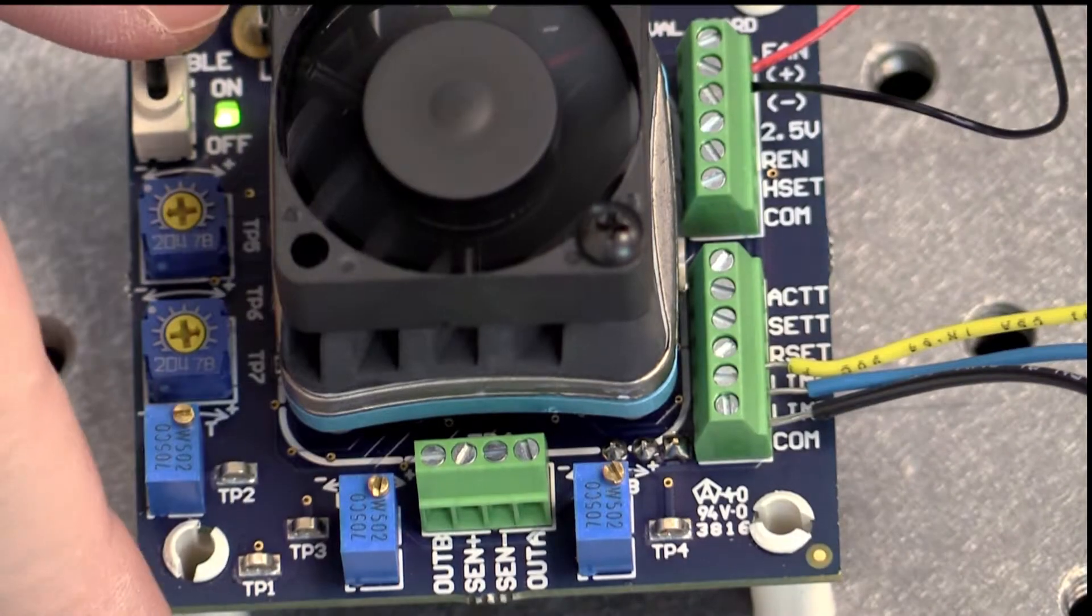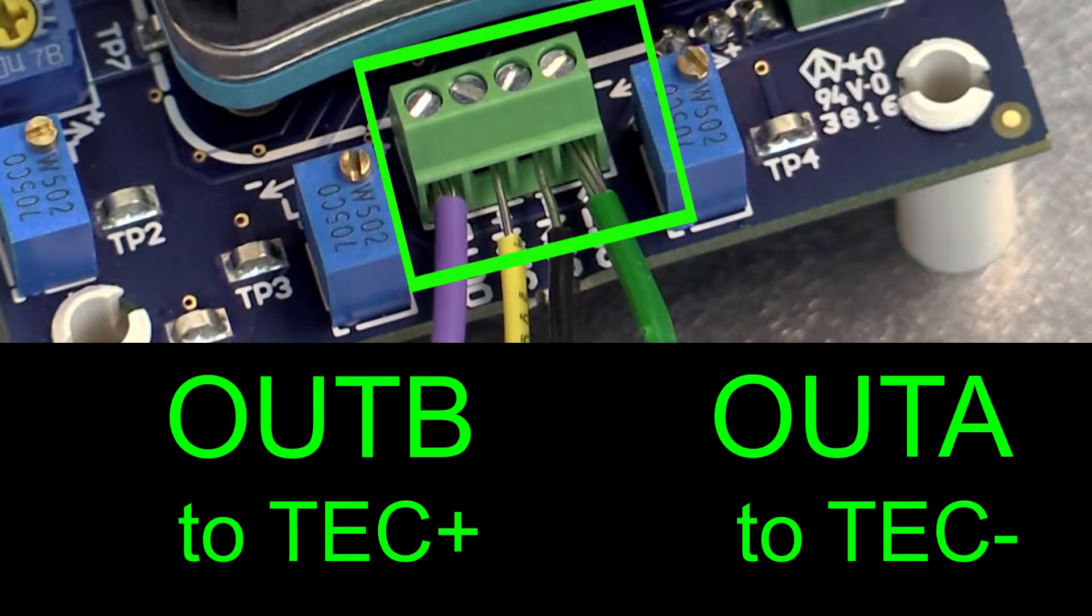With output disabled, connect the thermoelectric to OUT A and OUT B as shown.